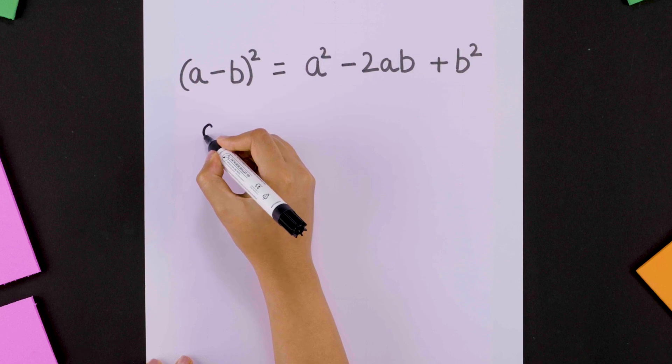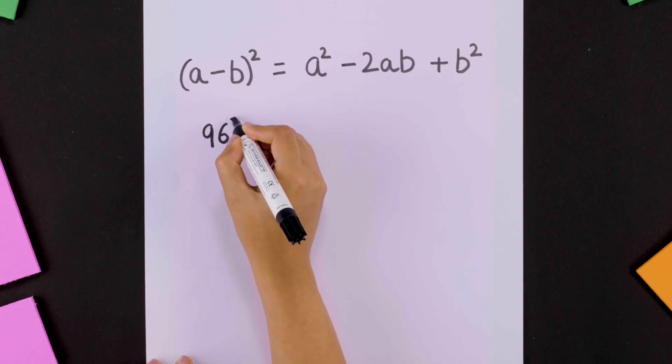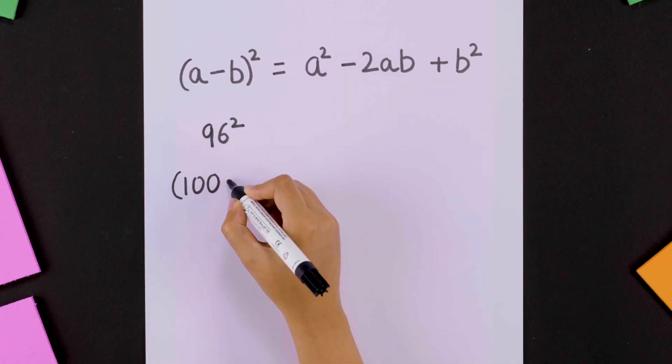It is especially useful for finding squares of numbers quickly. For example, we can write 96 whole squared as 100 minus 4 whole squared.